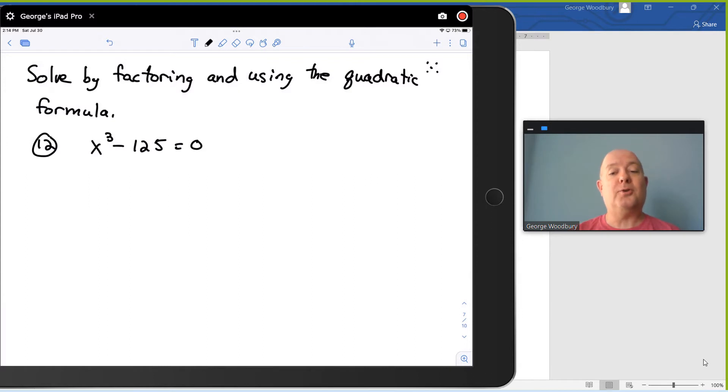In this video we're going to learn to solve an equation using a couple of approaches at the same time. This says to solve by factoring and using the quadratic formula, and we have x cubed minus 125 equals zero.